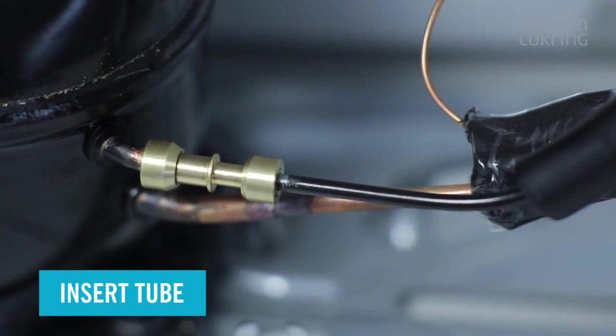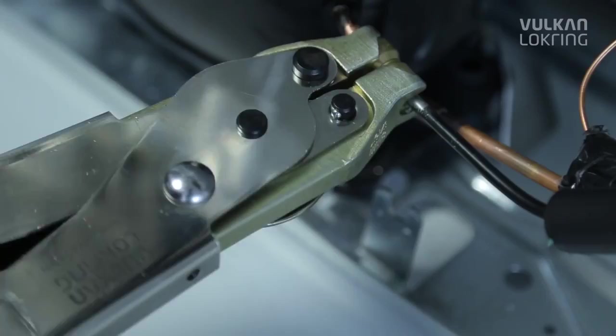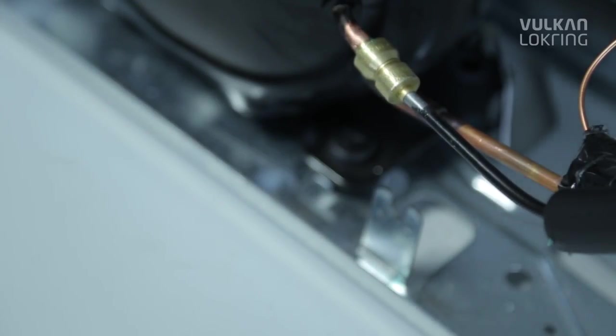Now push the tube ends all the way into the connector and press the lockrings onto the connector using the hand assembly tool. Finished.